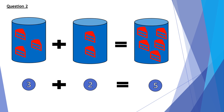Question 2. 3 cakes plus 2 cakes equals 5 cakes. So in the number form, 3 plus 2 equals 5.